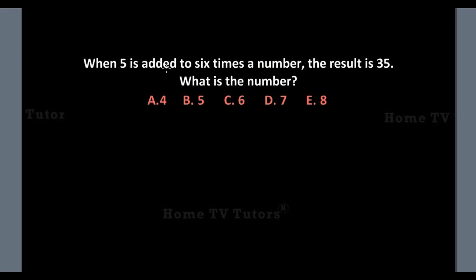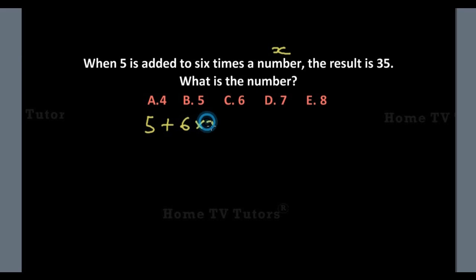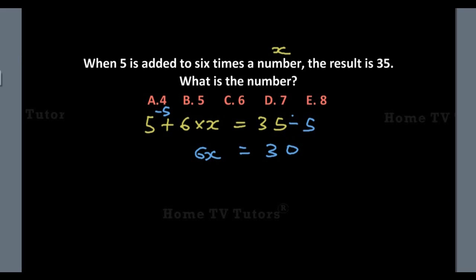When 5 is added to 6 times a number, the result is 35. What is the number? Let that number be represented by X. So 5 plus 6 times X equals 35. We subtract 5 from both sides: 5 minus 5 gives 0, leaving 6X equals 35 minus 5, which gives us 30.